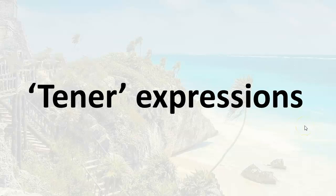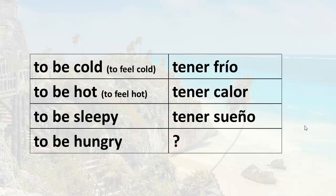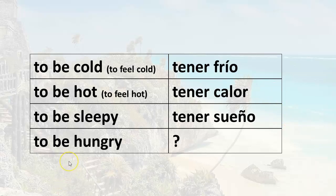Hello everyone, welcome. In this lesson we are going to continue learning TENER expressions in Spanish. Remember that a TENER expression is an expression in Spanish that uses the verb TENER, whose equivalent expression in English normally uses the verb TO BE. So far in previous lessons you've learned how to say TO BE COLD — tener frío, TO BE HOT — tener calor, TO BE SLEEPY — tener sueño. In this lesson we are going to learn how to express the idea to be hungry, and you can bet it uses the verb TENER.